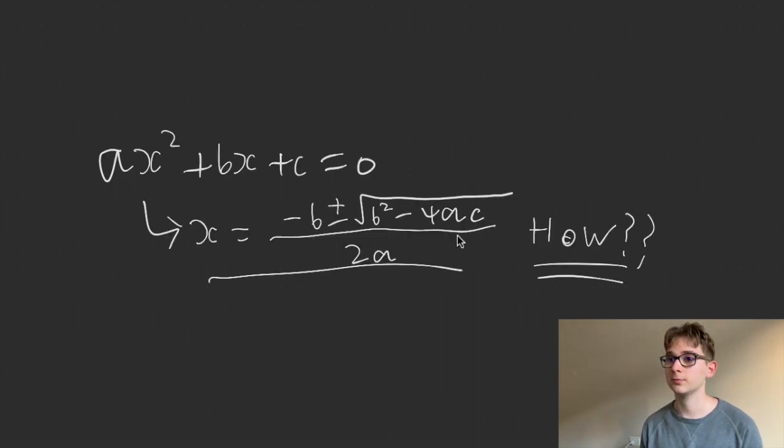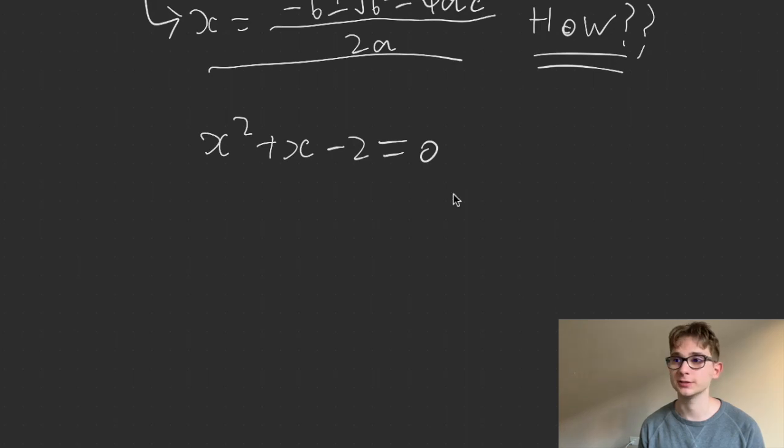So, start off, we need to know how to complete the square. Let's just give an equation for example, x squared plus x minus 2 equals zero. You can get real solutions, but anyways.